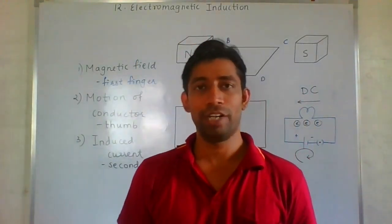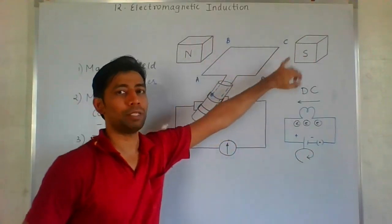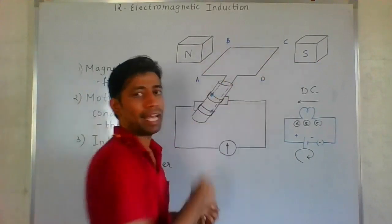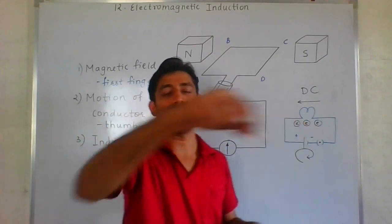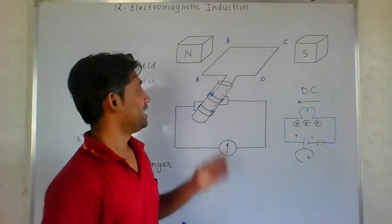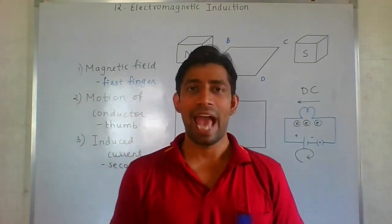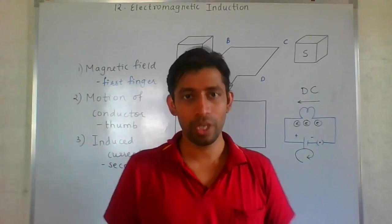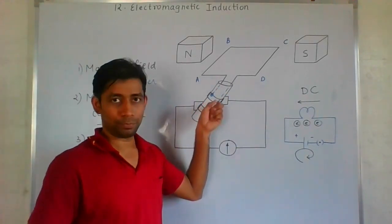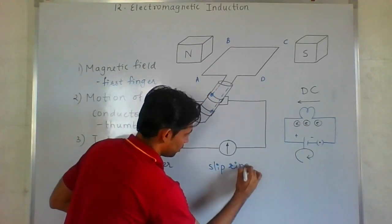Let's proceed to the working of the AC generator. You can see the parts of the AC generator. We have a magnet — because we need a magnetic field. Then there is a rectangular coil — it can have many turns: hundred, five hundred, even a thousand turns. This is your armature. Then this is your axle — also called the shaft. The axle rotates, and whatever is attached to the axle rotates with it. On the axle there are rings called slip rings — one below the other, two rings.